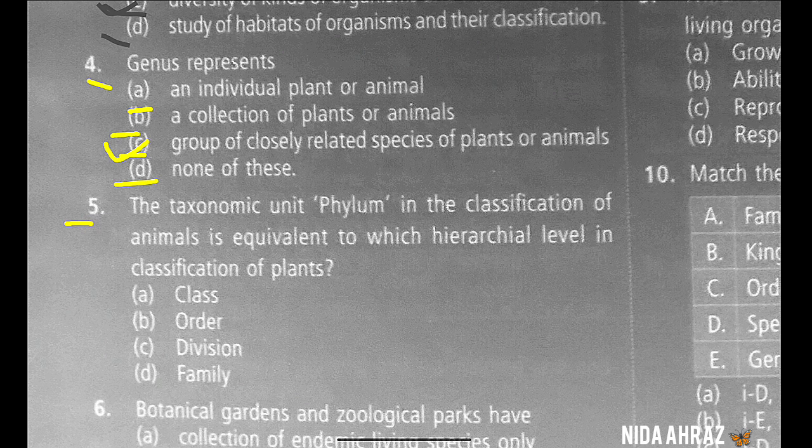Phylum or division is a taxonomic category higher than that of class and lower than that of kingdom. The term phylum is used for animals while the term division is used for plants. So option C is the correct choice.